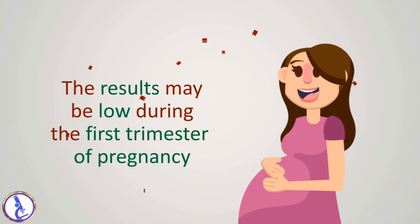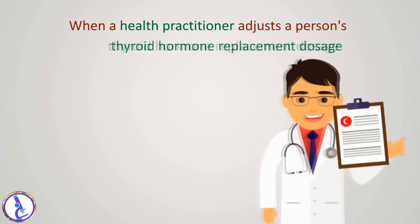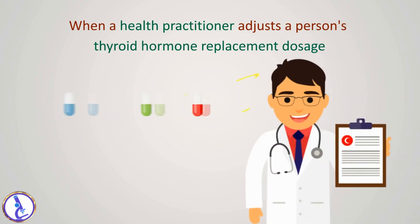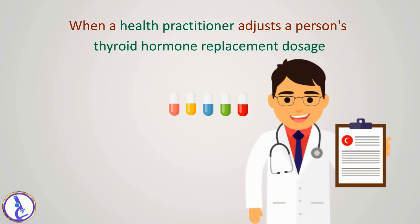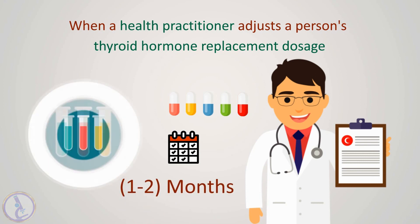Results may also be low during the first trimester of pregnancy. When a health practitioner adjusts a person's thyroid hormone replacement dosage, it is important to wait at least one to two months before checking the TSH again, so that the new dose can have its full effect.